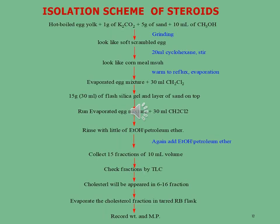Let's see the isolation and purification of steroids. This is the specific method for the extraction and isolation of steroid molecules. In this method, we take a hard-boiled egg yolk to which one gram of potassium carbonate is added, followed by five grams of sand and 10 ml of methanol. The whole material is ground to get a soft scrambled egg material. To this material, 20 ml of cyclohexane is added and stirred. The whole material is then subjected to reflux and evaporation.